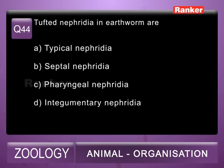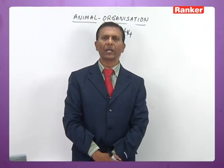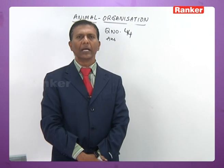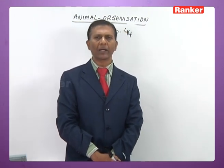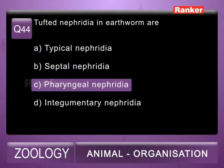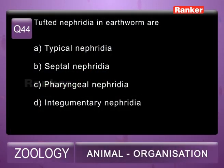Question 44: tufted nephridia of earthworm are A) typical nephridia, B) septal nephridia, C) pharyngeal nephridia, D) integumentary nephridia. The pharyngeal nephridia are present in the 4th, 5th, and 6th segments. Bunches of pharyngeal nephridia are present in each segment — that is why they are called tufted nephridia. The 44th question correct answer is C, pharyngeal nephridia.